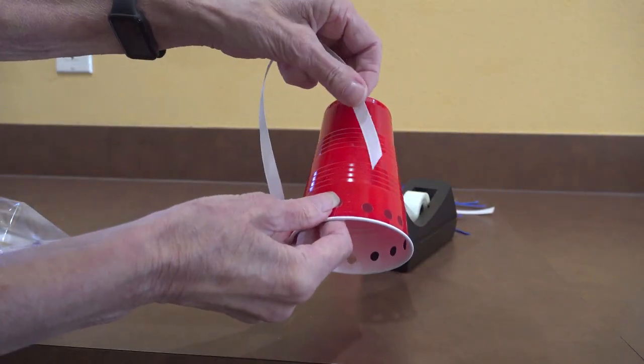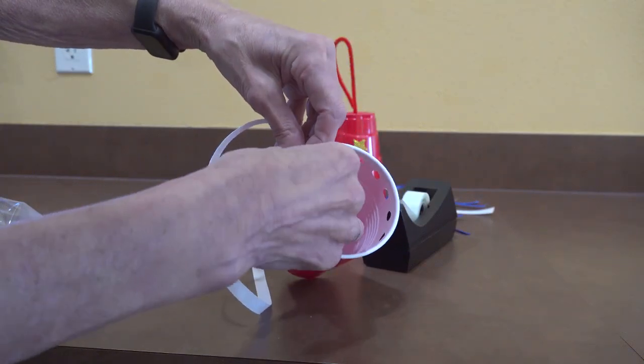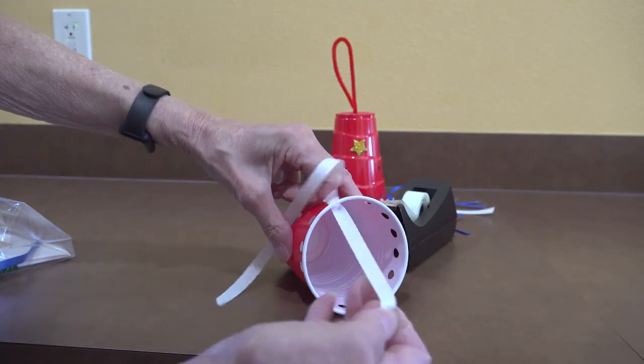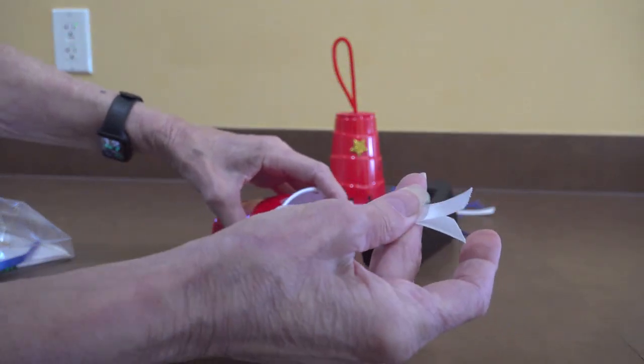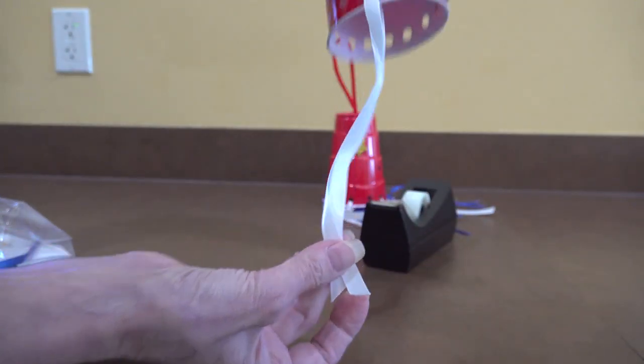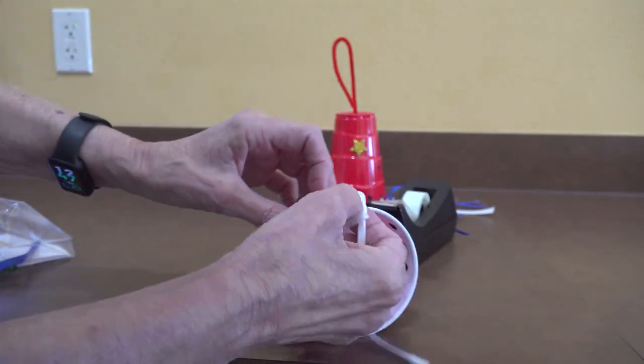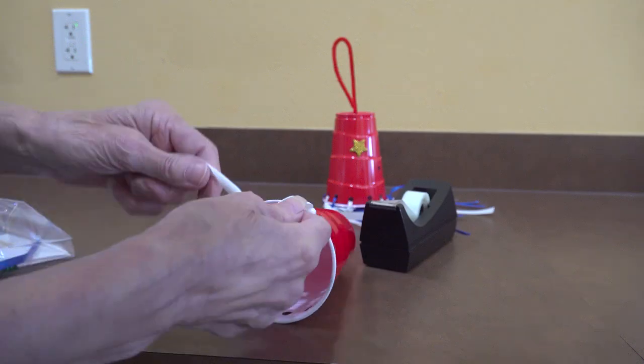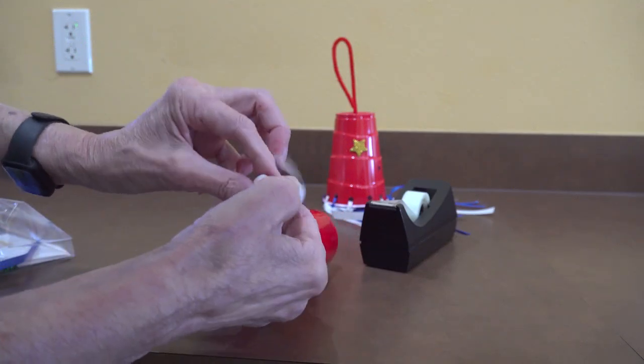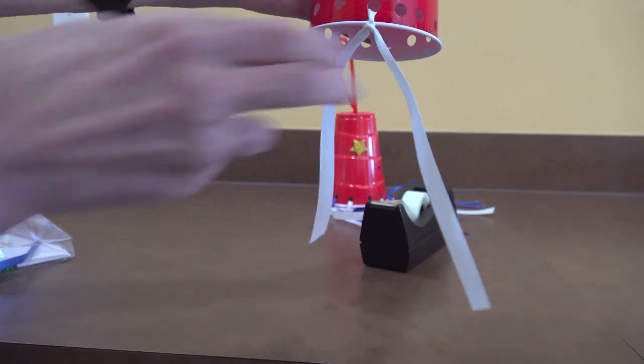All you do is string it through there. I tried to make sure my ends were even. Then I just tied a little knot. Okay, so there's my white one.